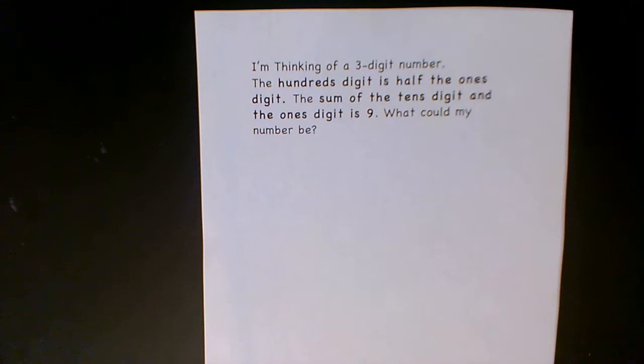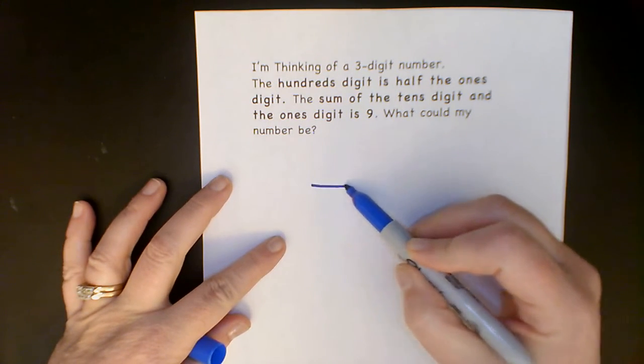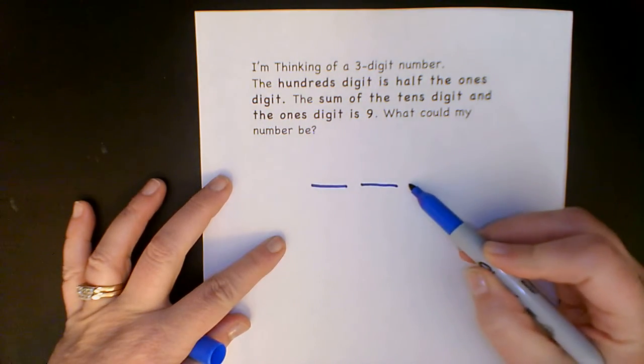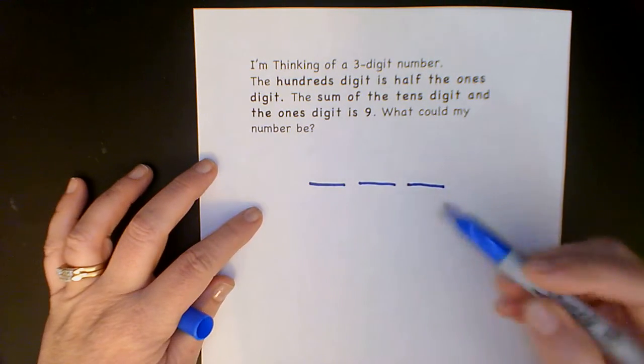All right, so let's take a look at this. It says I'm thinking of a three-digit number. The first thing I want to do is remember that digits are the different numbers that make up a whole number. So there's going to be three of them.